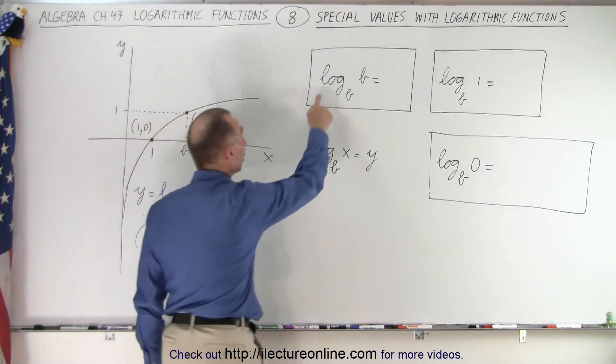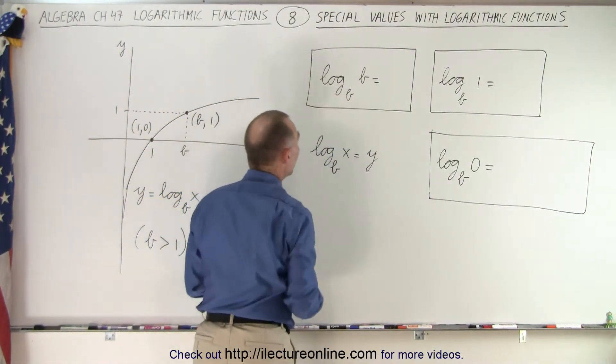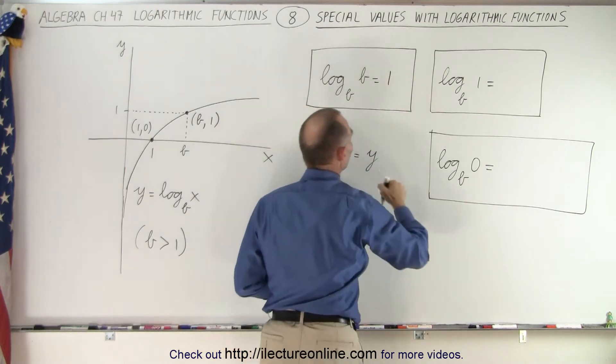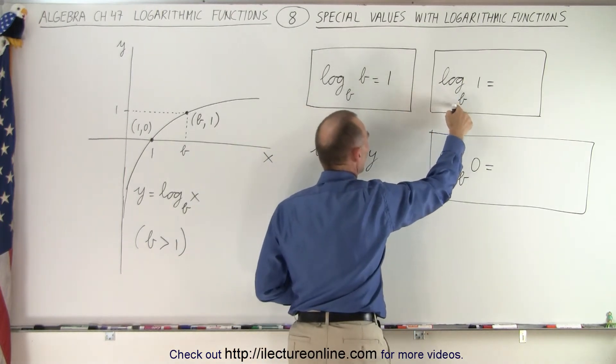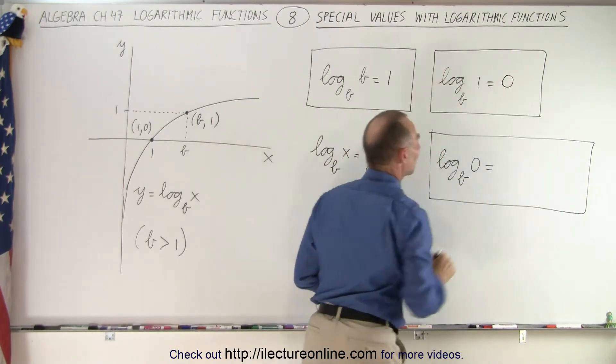And so, if we take the log with base b of b, we get 1. If we take the log with base b of 1, we get 0, and we'll get to this one later.